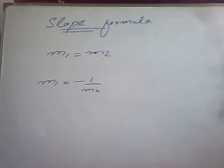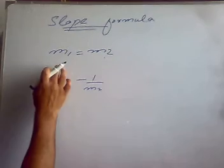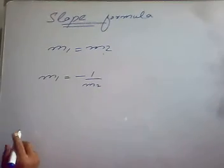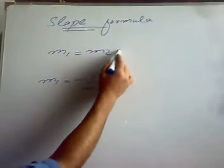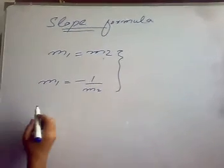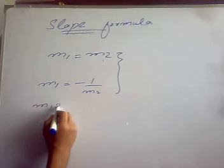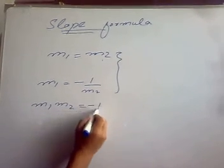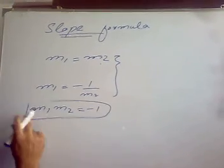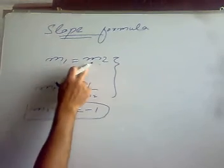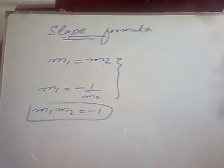And there is also another condition that m1 and m2, these both should be defined, then this relation will hold. And here the second relation can also be written as m1 times m2 equals minus 1. So this is the condition of perpendicularity of two lines and this is the condition of parallelism of two lines.